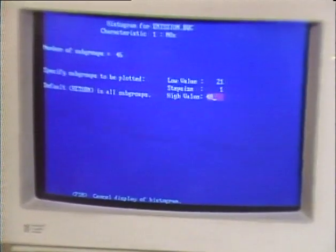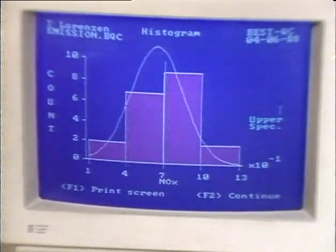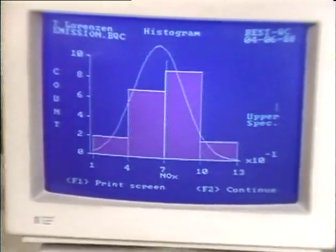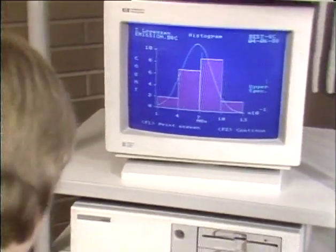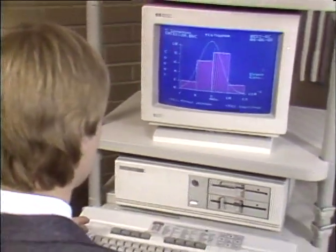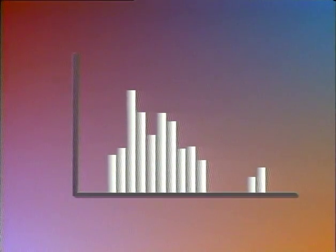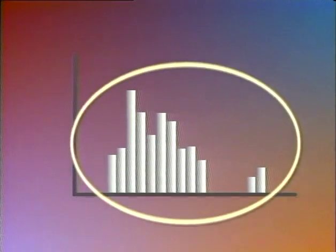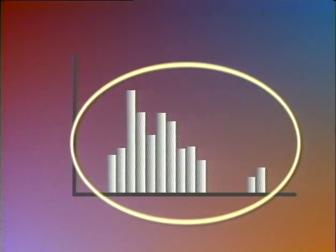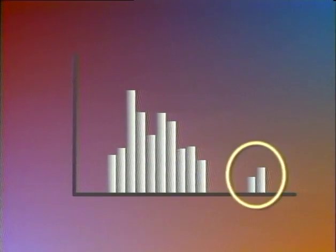Making histograms is one place where computers can help a lot. Computer software can make a choice of class size for us, and if we don't like the look of the histogram, we can just tell it to pick a different class size. Once we've constructed a histogram, we can immediately begin to get information from it. First, look for the overall pattern, and then look for deviations from that pattern, such as gaps or outliers.